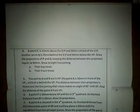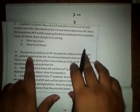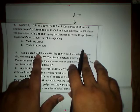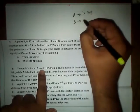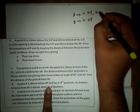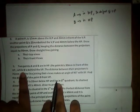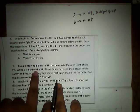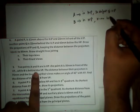Let us shorten and rewrite the question. I am going to directly annotate all these things. We have two points, A and B. Both point A and point B are in HP. Point A is 30mm in front of VP. B is behind VP, but the distance is not mentioned, so let us consider it is X mm behind VP.